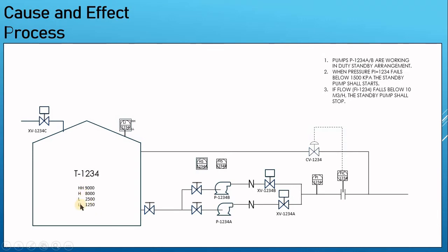The P&ID shows the tank with level values labeled L, L-L, H, and H-H — meaning low, low-low, high, and high-high values for the tank level. When the level goes below the low-low level, you will stop the two pumps to avoid cavitation — that's obvious — but you may need to do something else. From this P&ID we know they wanted to trip those two pumps. After the I&C guys do the cause and effect, they send it to the process team to evaluate, and they agree, add, subtract, or change things, because I&C is serving the process.